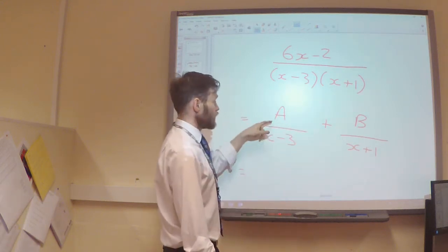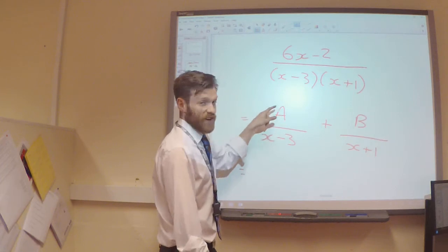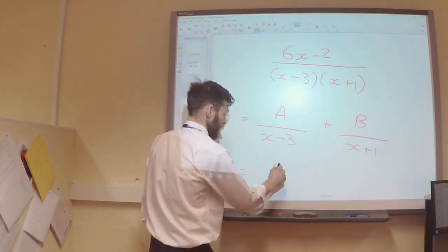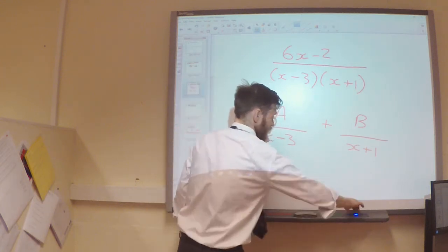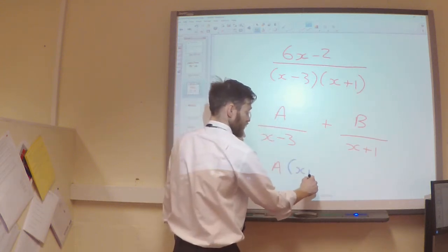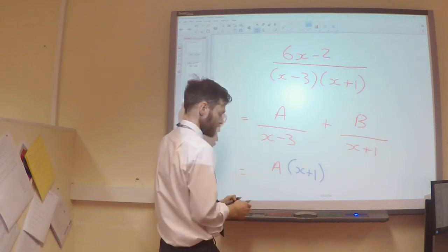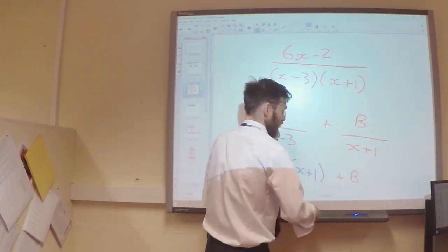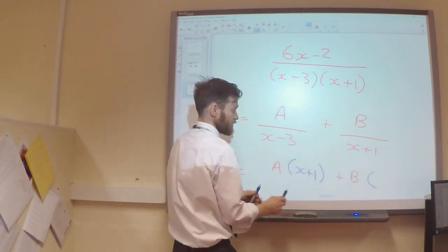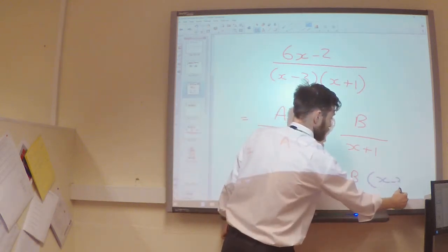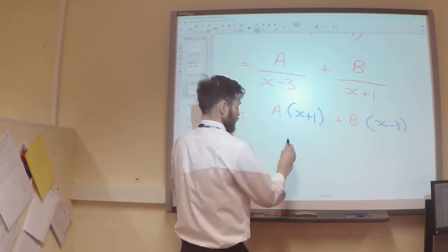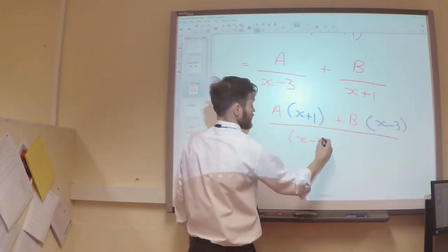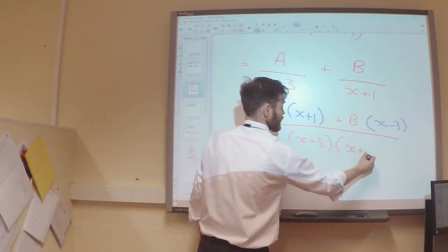So, in order to get that, I would multiply this fraction by the x plus 1. So, I would have A multiplied by x plus 1 plus B multiplied by the x minus 3. So, all of that is with my common denominator of x minus 3 times x plus 1.